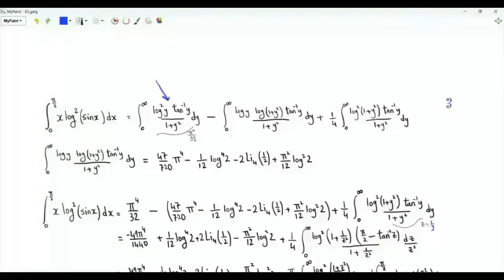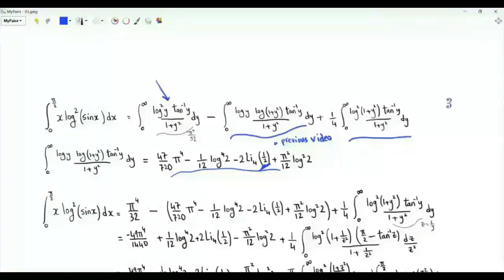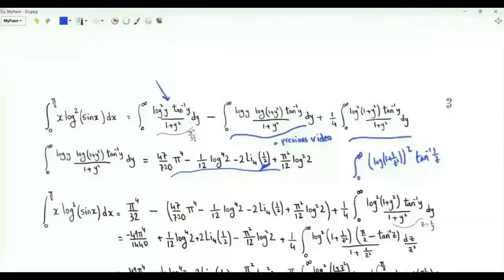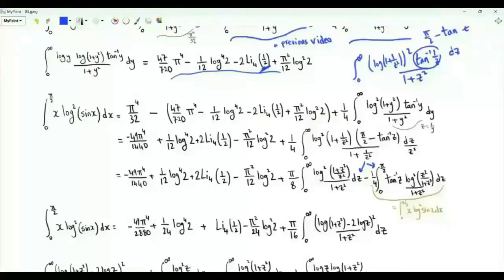We now have this integral, whose value was obtained in a previous video, expressed in terms of π, the natural logarithm of 2, and the polylogarithm function of order 4 with argument 1/2. We still have the remaining integral. Let's do the change of variables z equal to 1/y. The integral becomes the integral from 0 to ∞ of (log(1 + 1/z²))² times the inverse tangent of 1/z over 1+z². We can write the inverse tangent as π/2 minus arctan(z), splitting into two integrals.